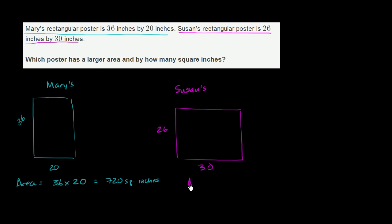What's the area here? The area is 26 times 30 square inches. Let's actually multiply this one out. We can do 26 times 3 and essentially add a 0 there.